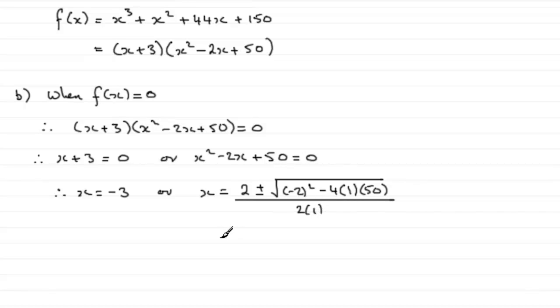And if you work this out, you'll find that you get 2 plus or minus, and here you've got 4 minus 200, which is the square root of minus 196, and that's all over 2. Now if it was the square root of 196, it would be 14, but we've got minus 196, so it's 14i.